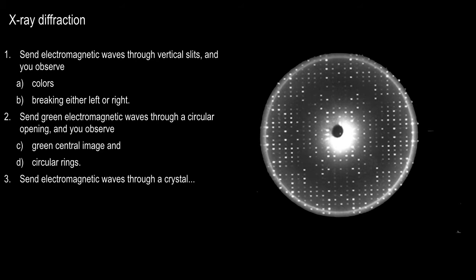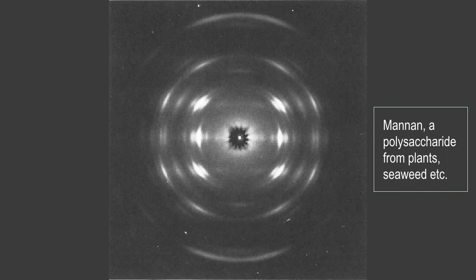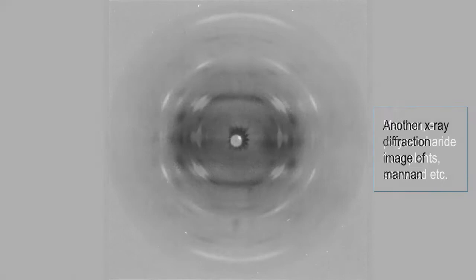You can do that for a whole lot of molecules if you're really careful. For instance, hemoglobin — look at this X-ray diffraction image. That's the molecule that carries oxygen in your blood. Here's another one: mannan, a polysaccharide from plants and seaweeds. If you look carefully at chewing gum, sometimes you'll see it says mannitol — M-A-N-N-I-T-O-L. That's derived from this same polysaccharide. It's a sugar alcohol. Here's another X-ray image of mannan. The one we really want to focus on is the next one: the most famous X-ray image of all time.